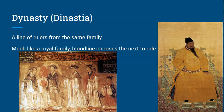Our next vocab word is dynasty. A dynasty is very unique to ancient China — it is a line of rulers all from the same family, much like a royal family bloodline choosing who rules next. An emperor's firstborn son becomes the next emperor, and then that son's child becomes the emperor after, and so on.